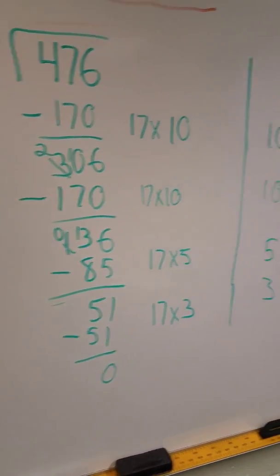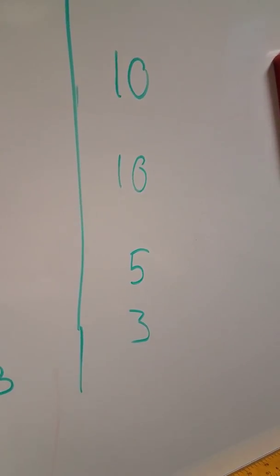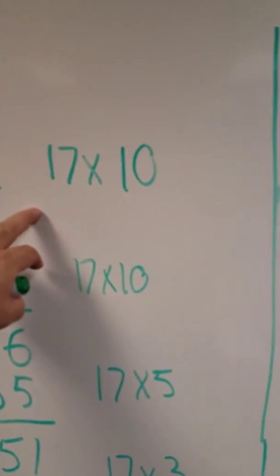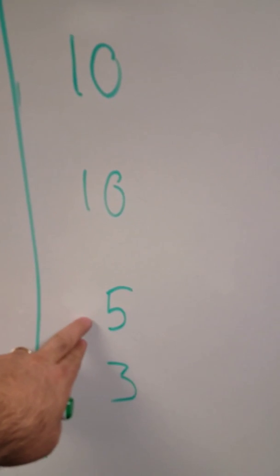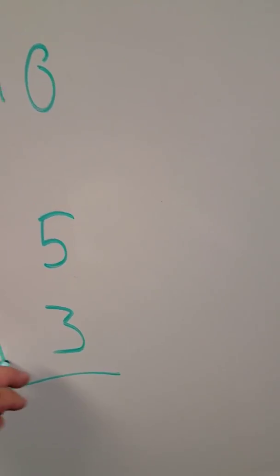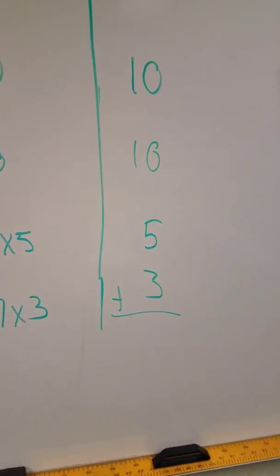Except now I'm going to add up all of my partial quotients, my partial answers. I got 10, 17 times 10, plus 10, 17 times 10, plus 5, 17 times 5, and 3, 17 times 3. I add all of those up. 10 plus 10 plus 5 plus 3, 10, 20, 25, 28.